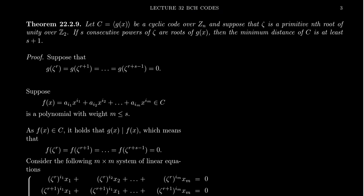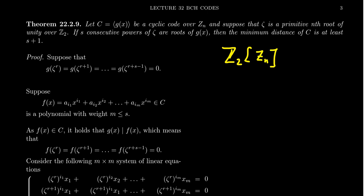Let's remind ourselves about a few things. What's a cyclic code again? A cyclic code is a code for which every codeword, if you cyclically permute the elements of that codeword, gives you another codeword. So a cyclic code is a linear code closed under cyclic permutation. We've seen that every cyclic code is in one-to-one correspondence with the ideals of the group ring over Z_N, where Z_N is the finite cyclic group of order N. More specifically, we have our group ring Z_2 adjoined Z_N.